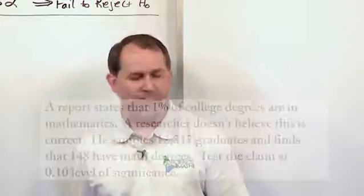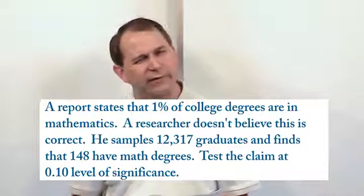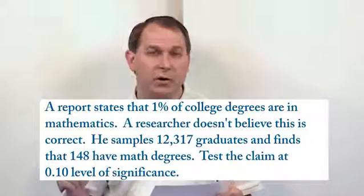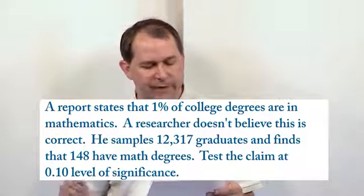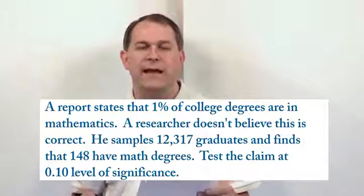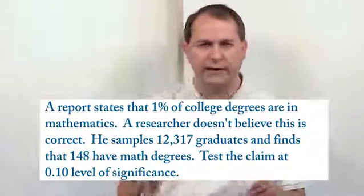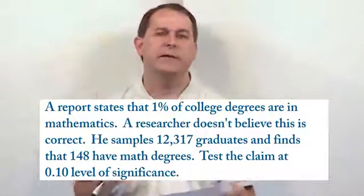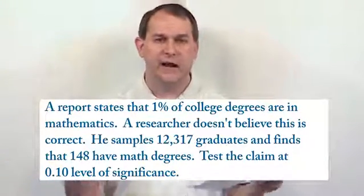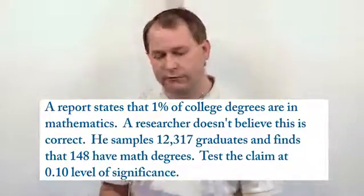The problem says a report states that 1% of college degrees are in mathematics. A researcher doesn't believe this is correct, so he samples 12,317 college graduates and finds that 148 of them have math degrees. Test the claim at a 0.10 level of significance. Notice here there's no wording about greater than or less than. This is not a case of less than 1% or greater than 1%, it's just 1% or not 1%. So we have a two-tailed distribution.